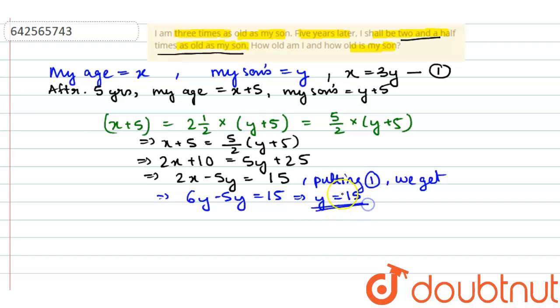Therefore, my son's present age is 15. So my age at this point is three times that of my son, so that is 3 into 15, that is 45. So my age is 45 and my son's age is 15 right now.